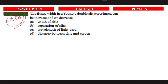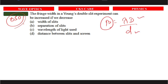The fringe width in Young's double slit experiment can be increased if we decrease the slit separation d. Using β = λD/d, decreasing d increases β. This is the right answer.